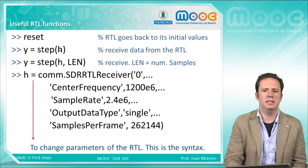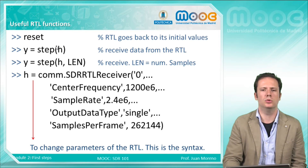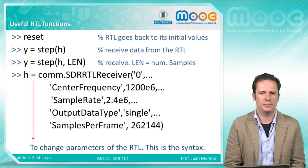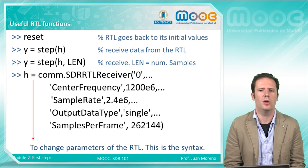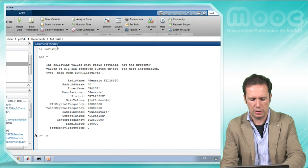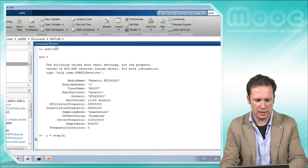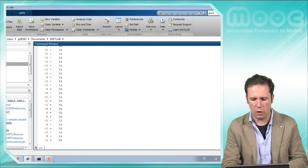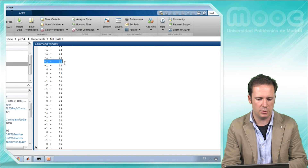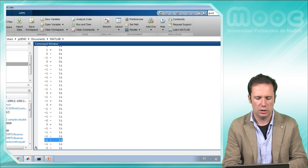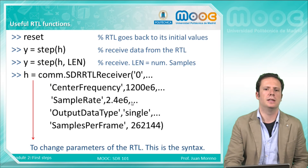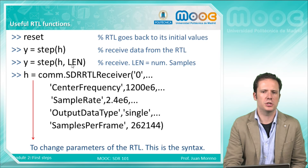There are more useful RTL functions. The first one is 'reset', which restores the RTL back to its initial values. The second one — very important and used a lot when working with the RTL in MATLAB — is the 'step' command. It is used to receive data from the RTL. Typing this command, we will receive some raw data; here you can see a large column array of complex numbers. This is the raw data coming from the output of the RTL. The step command has many options, and the 'length' parameter specifies the number of samples you want to receive.